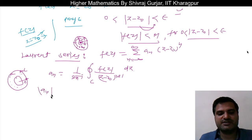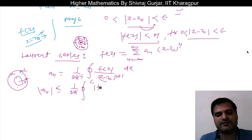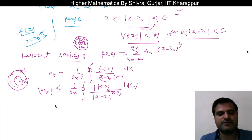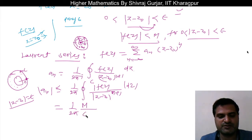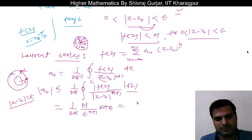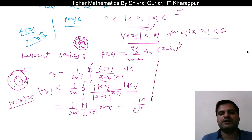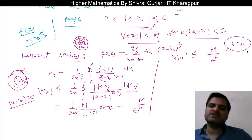This gives us the bound: |aₙ| is less than or equal to 1 over 2π times the integral of |f(z)| over |z - z-naught|^(n+1) on the modulus. Since |f(z)| < M and |z - z-naught| = epsilon on the circle, this yields |aₙ| ≤ M divided by epsilon^n, where n is any integer from minus infinity to infinity.